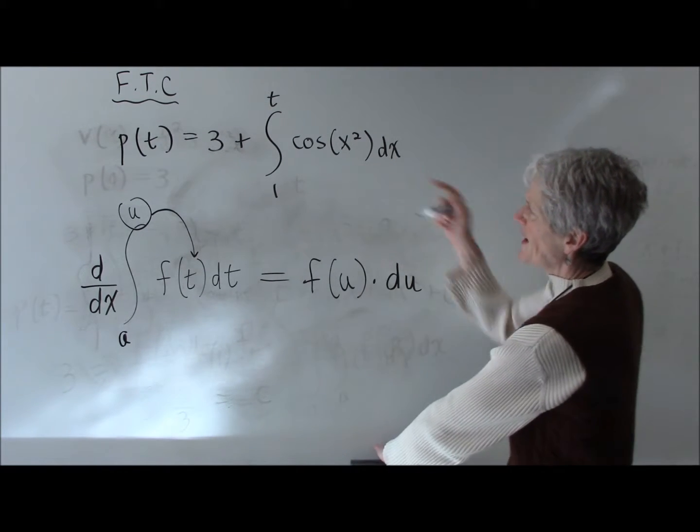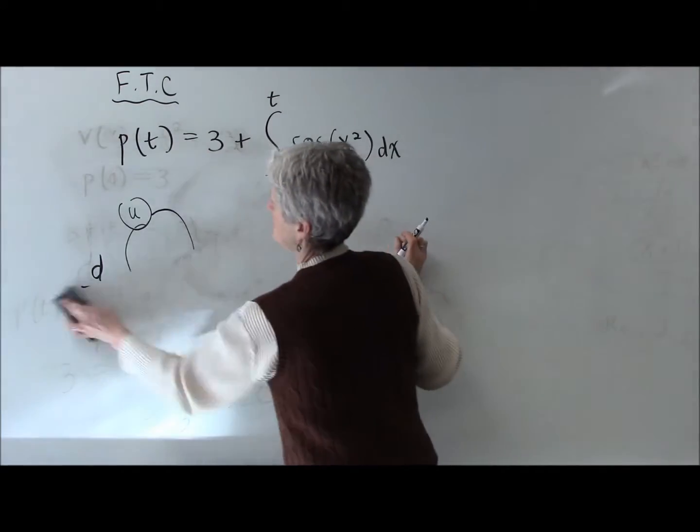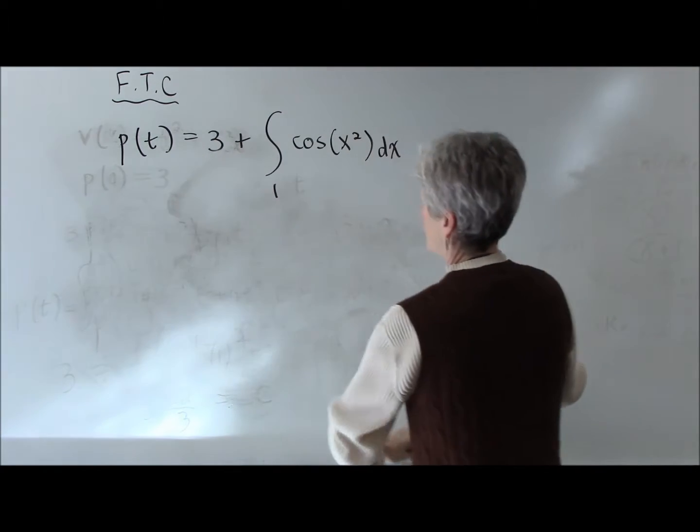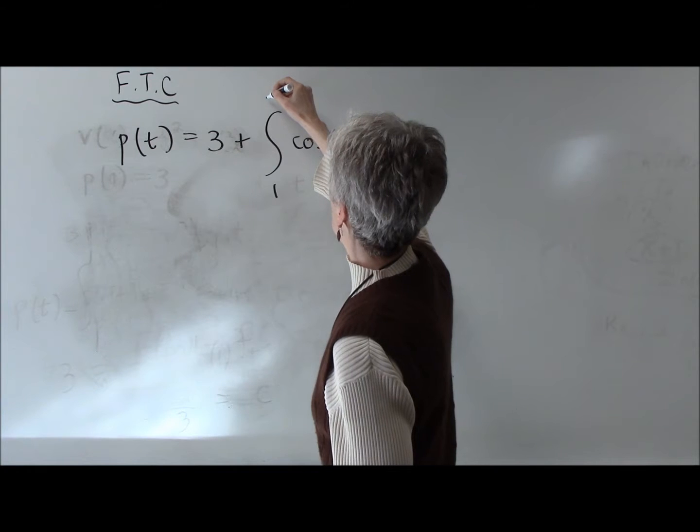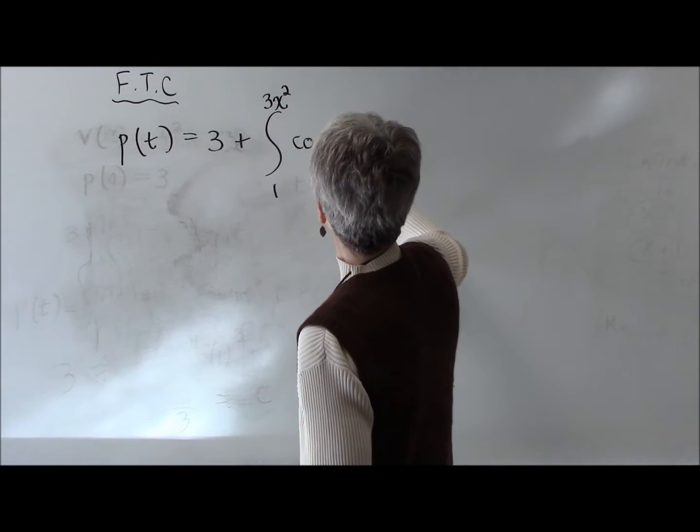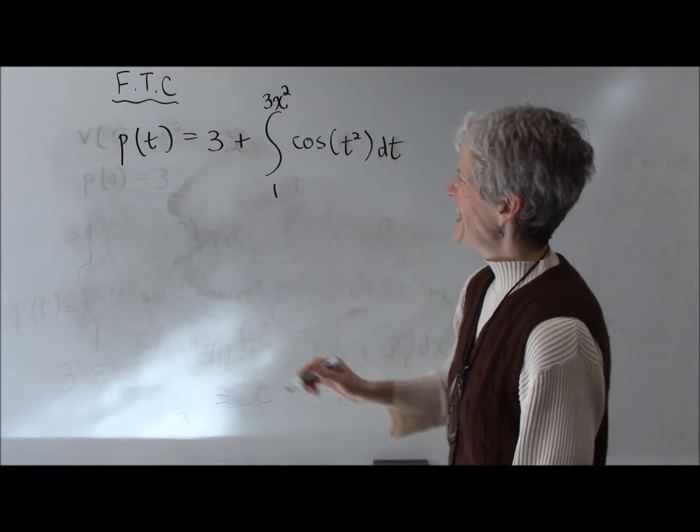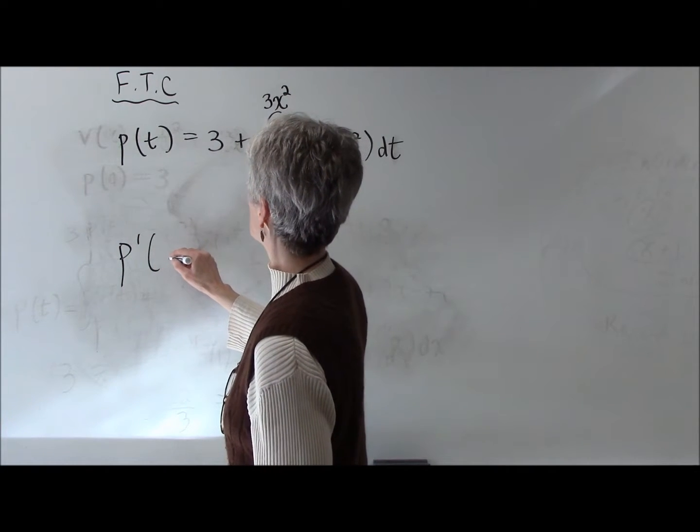So if I wanted to look at this function, and let me just tweak it a little bit and say I'm going to, let's say, 3x squared. And let's turn this into a t, just so we have a different dummy variable. And let's say I want to find the derivative of this.